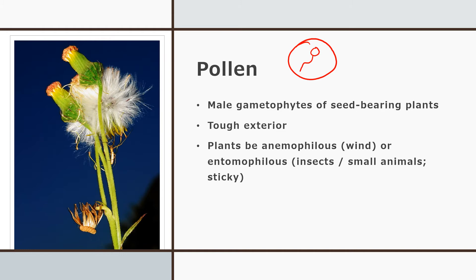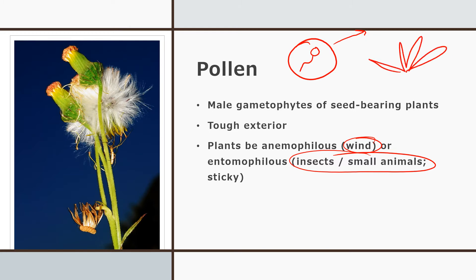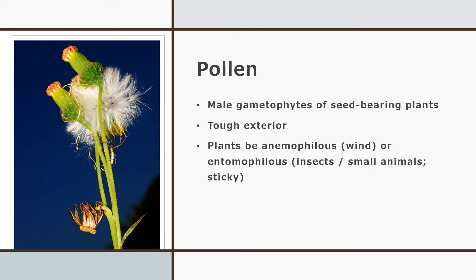Pollen refers to the male gametophytes of seed-bearing plants — basically a shell with plant sperm inside. The pollen is released into the atmosphere, either carried by wind or by a small animal like a bumblebee. The kind carried by insects is usually pretty sticky so it sticks to the animal, while wind-carried pollen tends not to be super sticky. Eventually it finds its way to a plant and fertilizes it to make a seed. The picture shown is a common dandelion, which releases pollen.